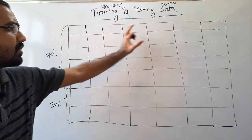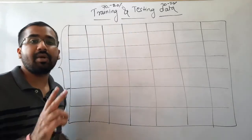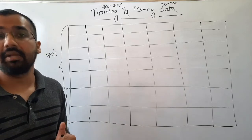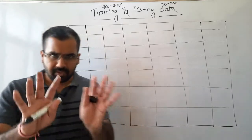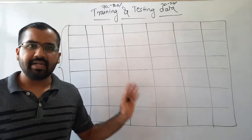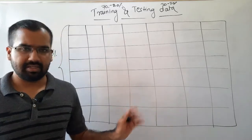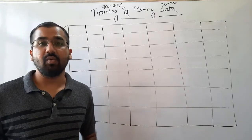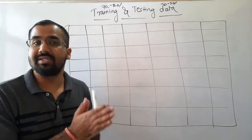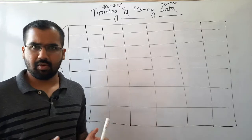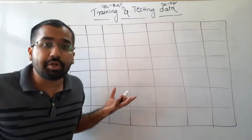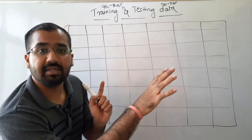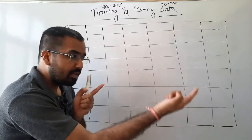Now focus on the variables or attributes that are present. There are basically two types of variables: independent variables and dependent variables. A simple example will make the idea crystal clear. Let's say you are the CEO of your company and you want to investigate the annual sales — you want to predict what the annual sales figure is going to be this year.